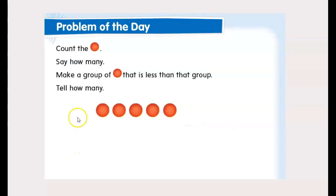So first, let's just do our problem of the day. It says count the circles, the red circles. So 1, 2, 3, 4, 5. And then they want us to say how many, which is 5. Make a group of red circles that is less than that group.